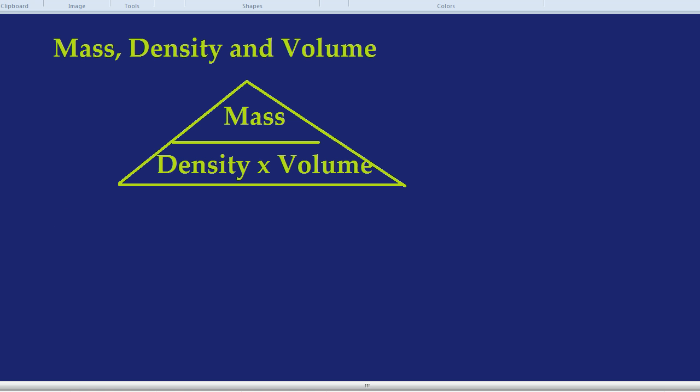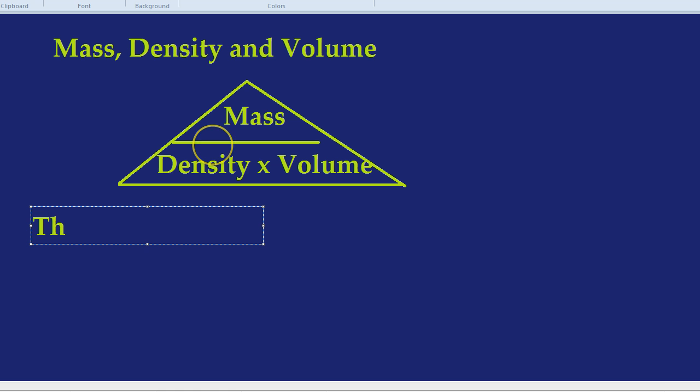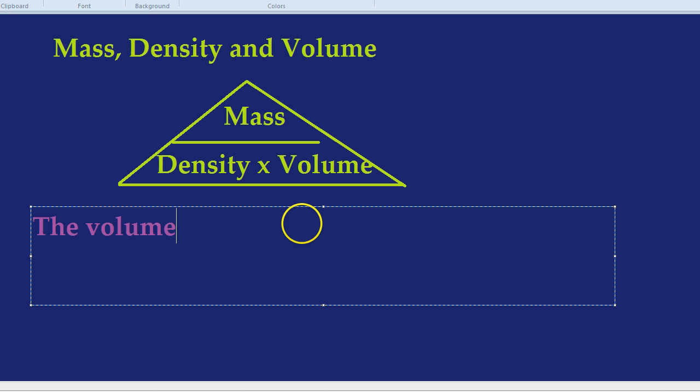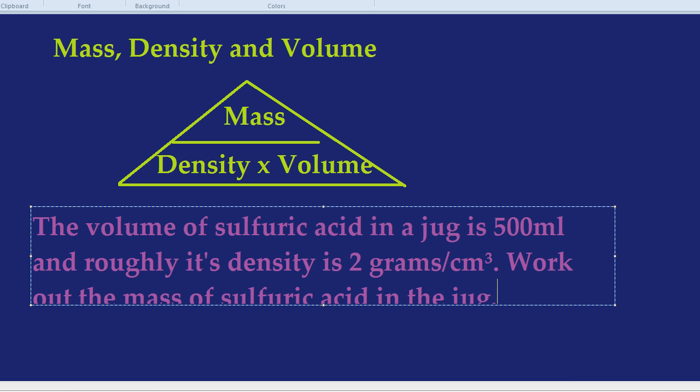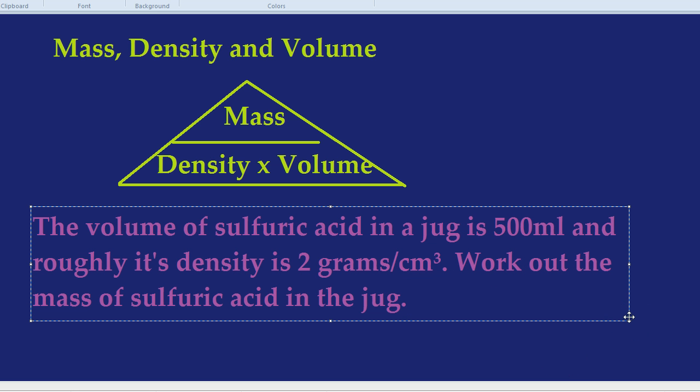Let's see if this works in action. The volume of sulfuric acid in a jug is 500 milliliters, and roughly speaking, its density is 2 grams per cubic centimetre. We need to work out the mass of sulfuric acid. So what are we looking for? We're looking for the mass, so we need to cover up the mass on our triangle, and we have density multiplied by volume.